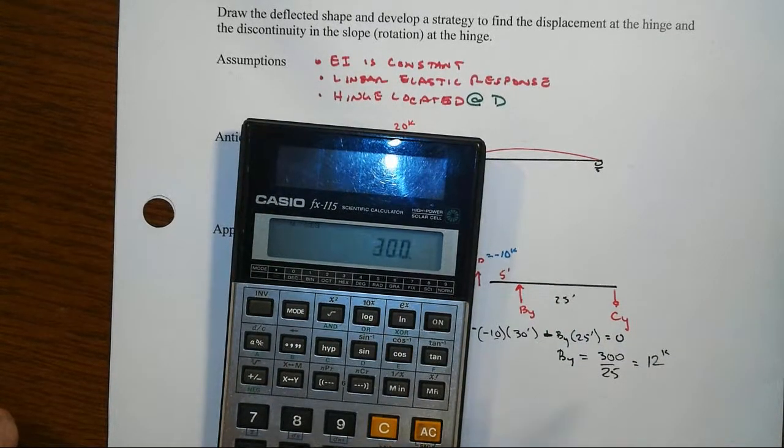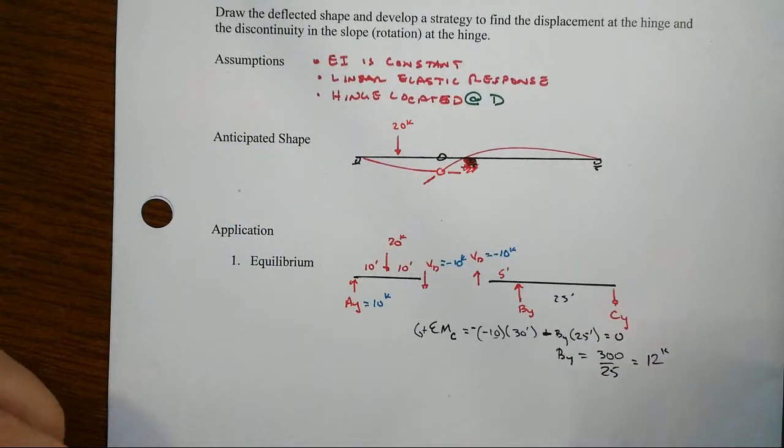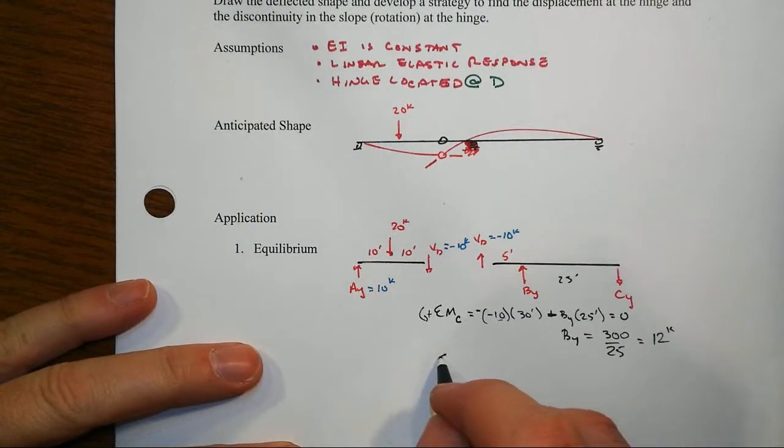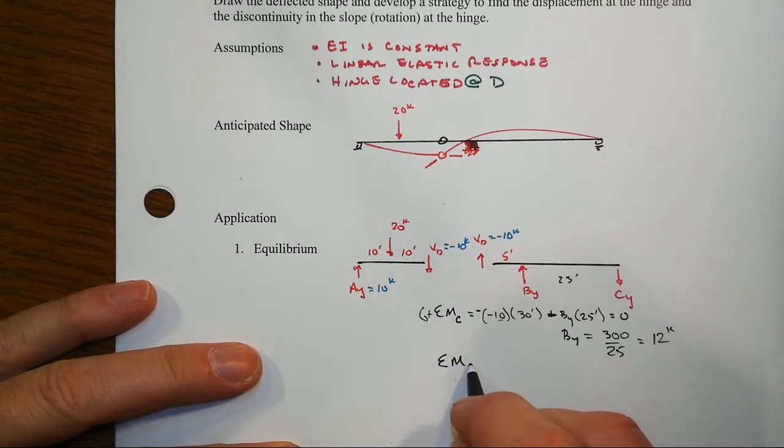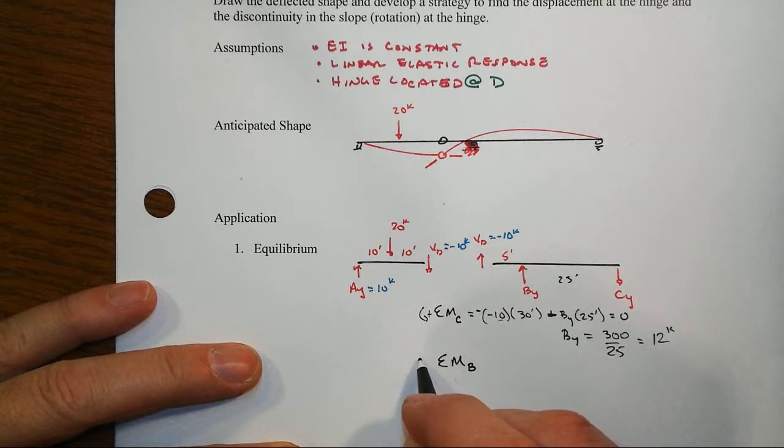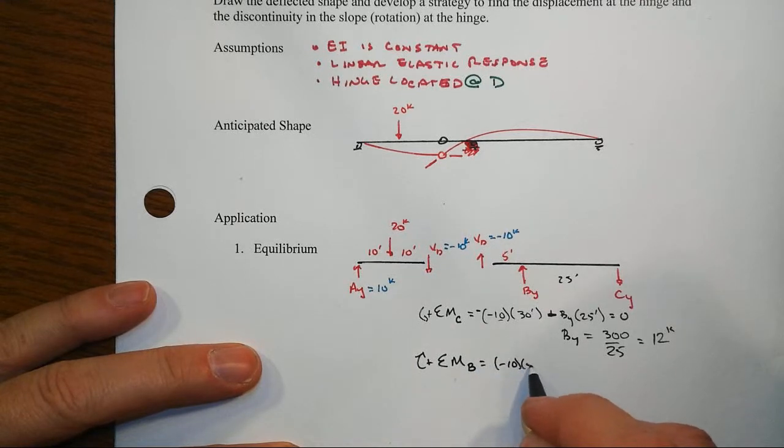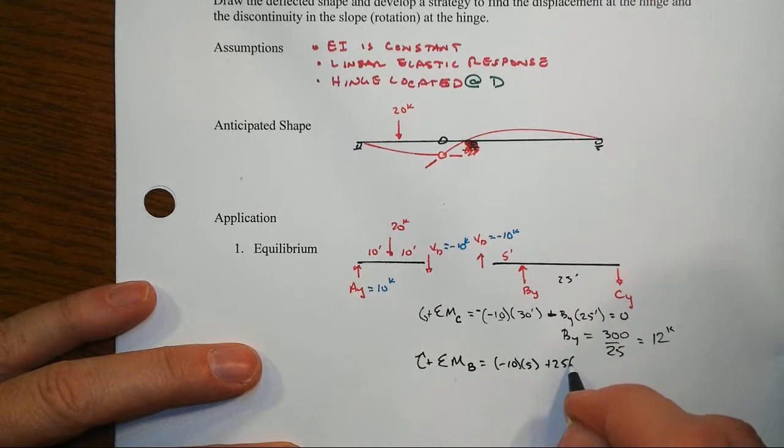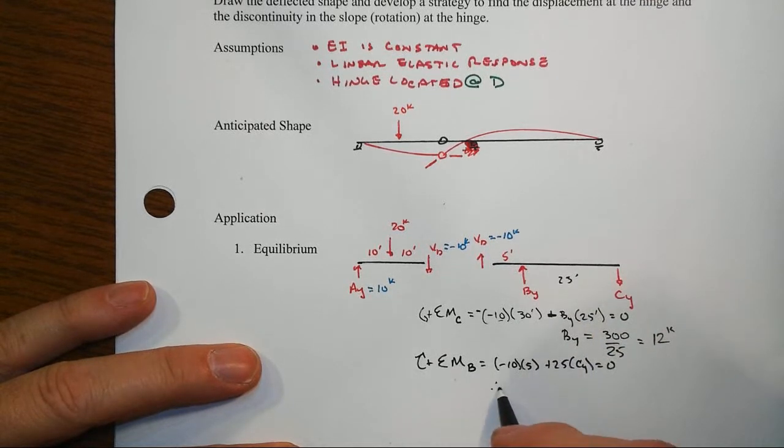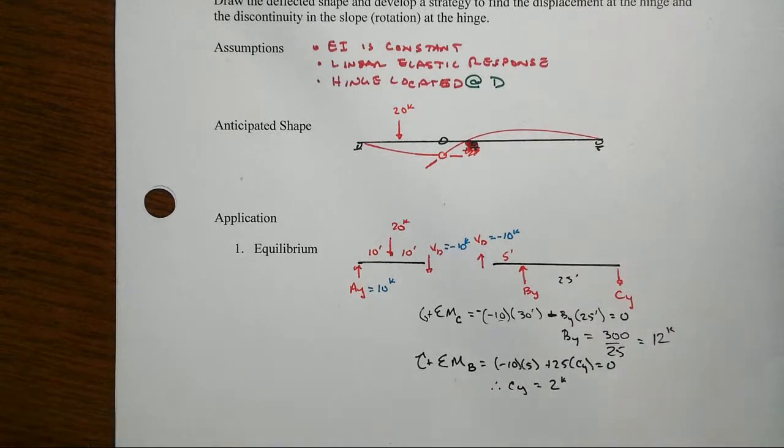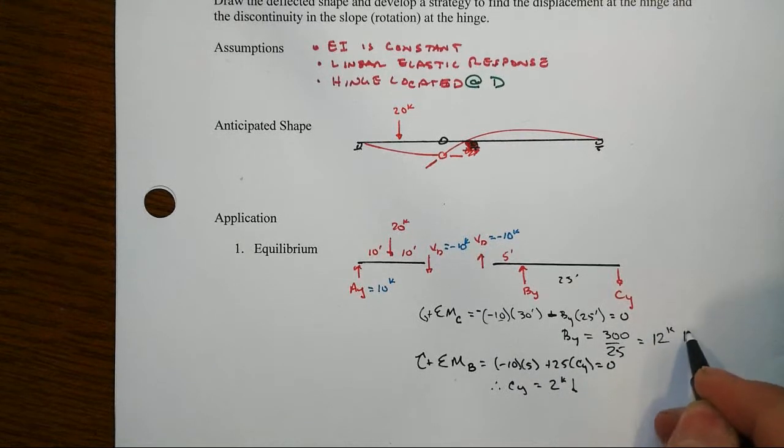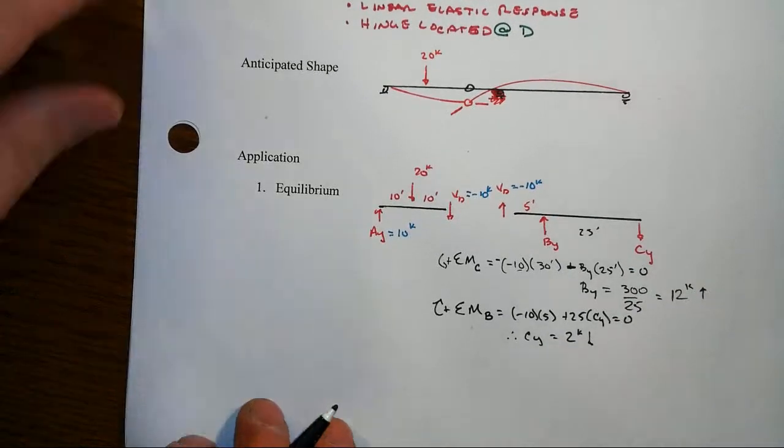And then we can sum moments in the other direction, meaning about point B. And let's take then clockwise as positive. So that will be now minus 10 times 5 then plus 25 times CY equals 0. And therefore CY is going to be equal to 2 kips acting in the direction as shown. And so those, there are those values.